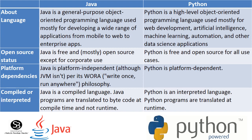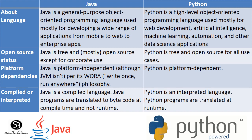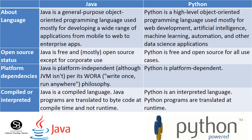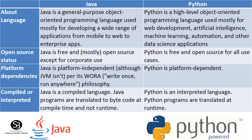Regarding open source status: Java is free except for corporate use, while Python is free and open source in all use cases. Regarding platform dependency: Java is platform independent — write once, run anywhere — while Python is platform dependent. Regarding compilation: Java is a compiled language where the program translates before runtime, while Python is an interpreted language where the program translates at runtime.